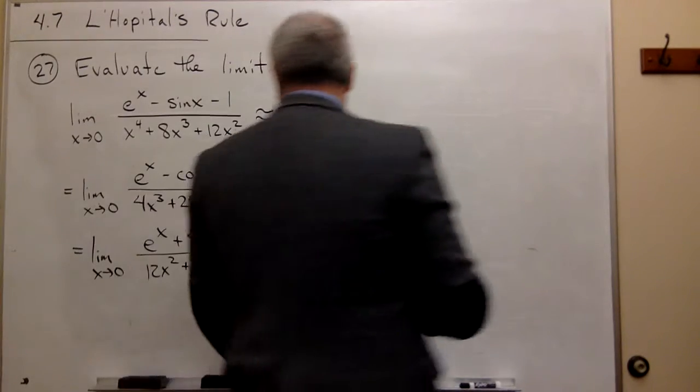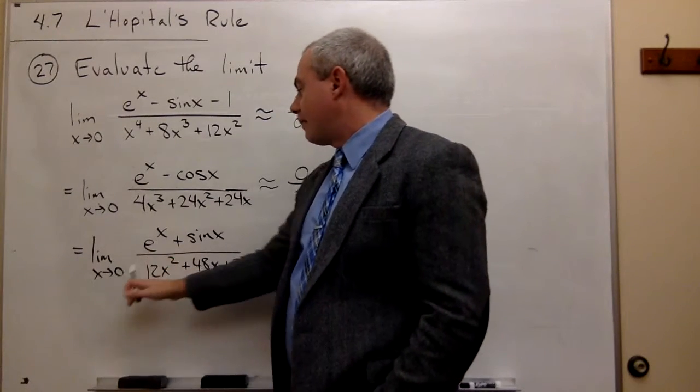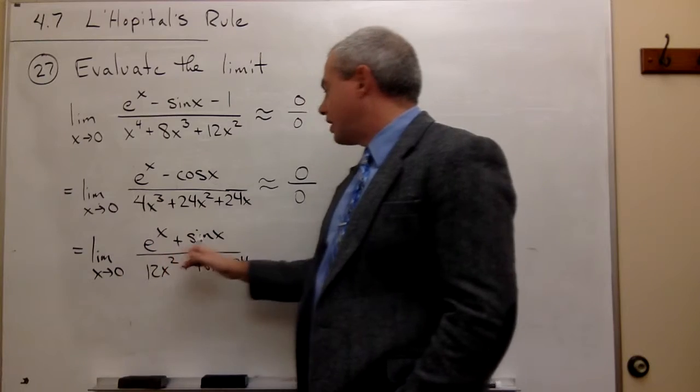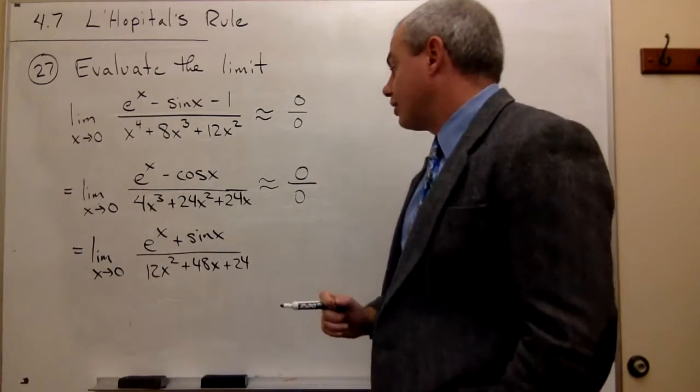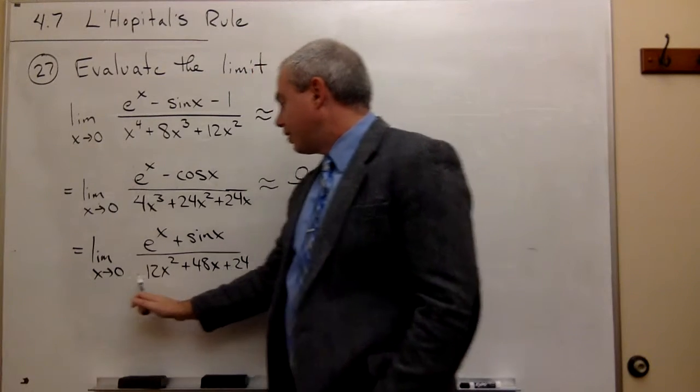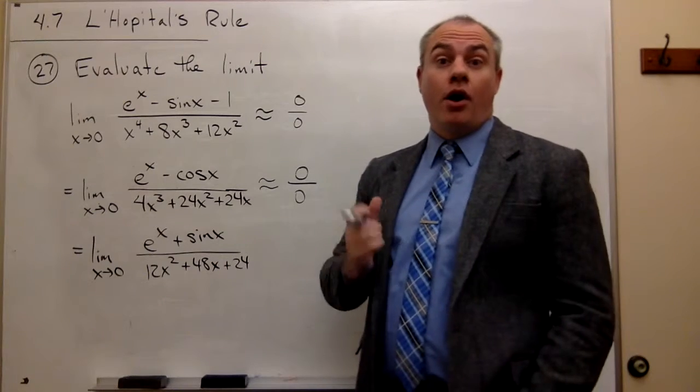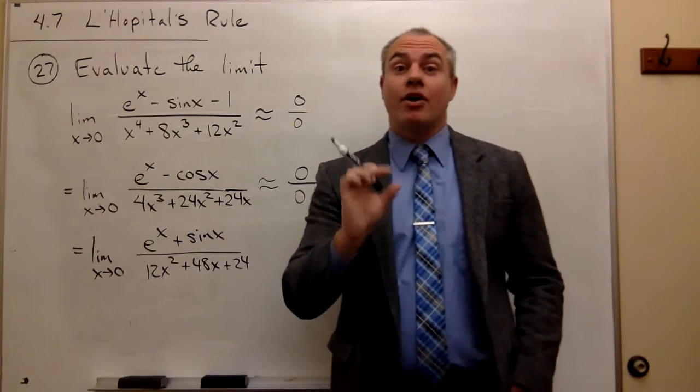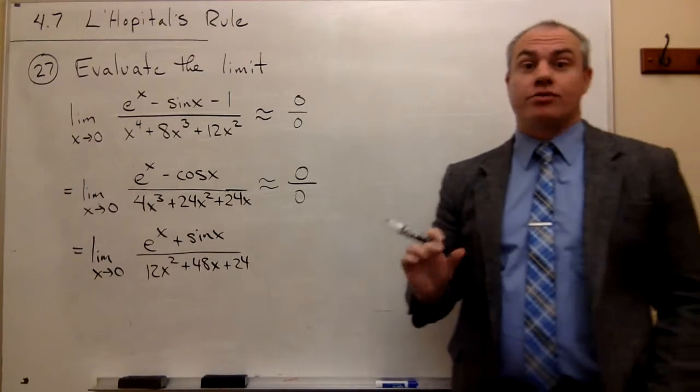Let's look at this again. What happens if I plug in 0 to the top? I get 1 plus 0. Well, 1 plus 0 is not 0. And what about on the bottom? If I plug in 0, I get 0 plus 0 plus 24, also not 0. So I can go ahead and take a limit at this point. I do not need to use L'Hôpital's rule again.